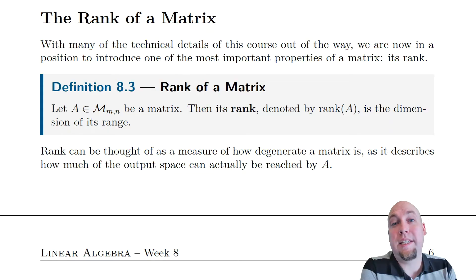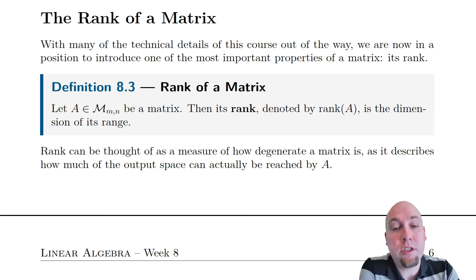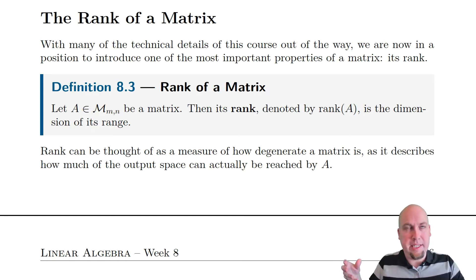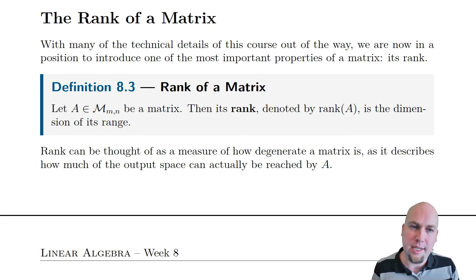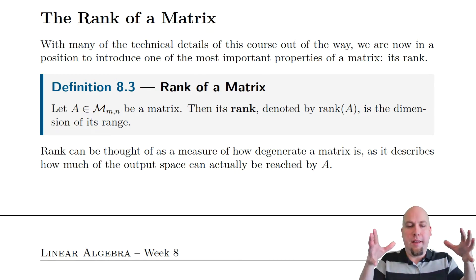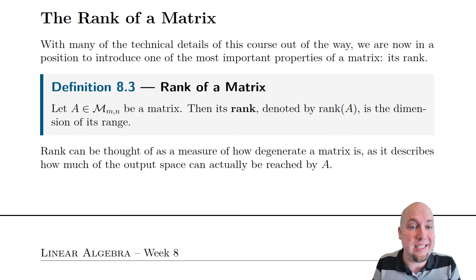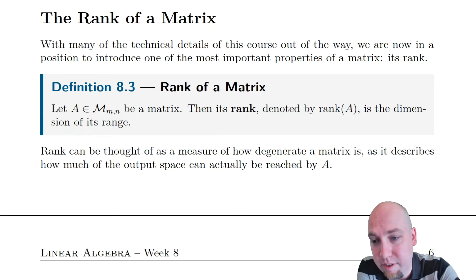Hey folks, my name is Nathan Johnston. Welcome to lecture 32 of introductory linear algebra. In today's class, we're going to look at something called the rank of a matrix. All the rank of a matrix is, is it's the dimension of the range of the matrix. The range of a matrix is the output space — it's the set of all things you can reach via matrix multiplication, the collection of all vectors of the form A times X. That set is a subspace, so it makes sense to talk about its dimension, and that dimension is exactly the rank of a matrix.